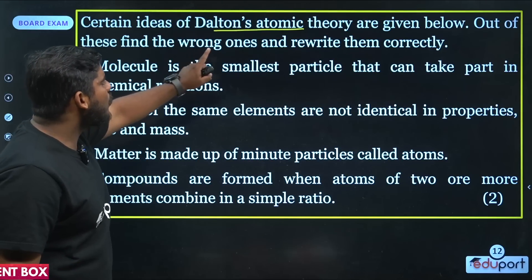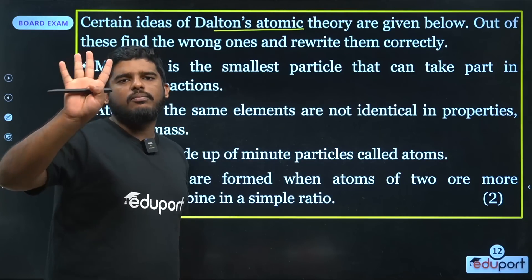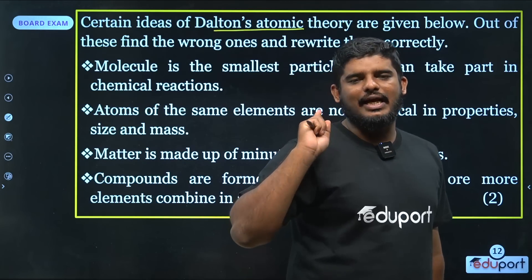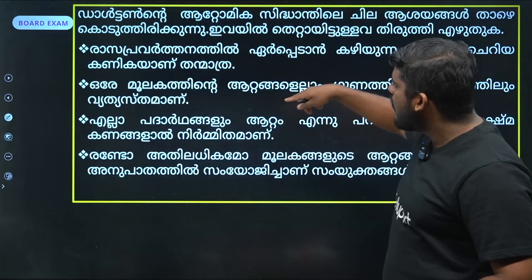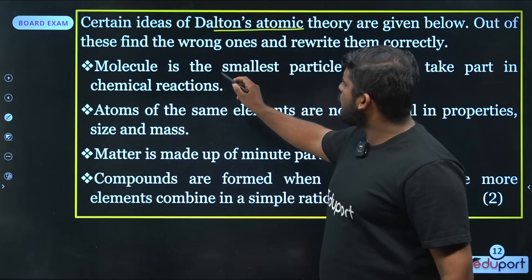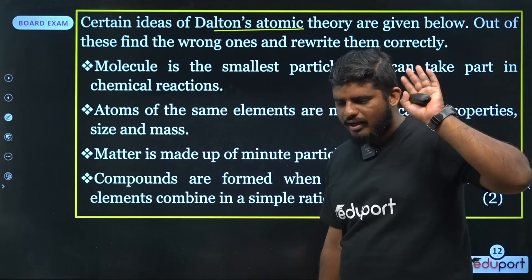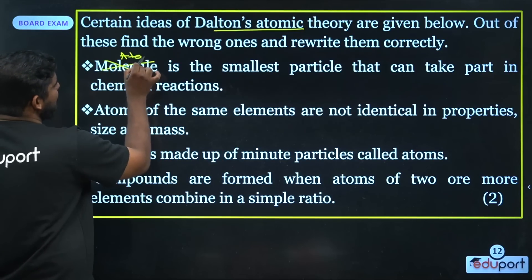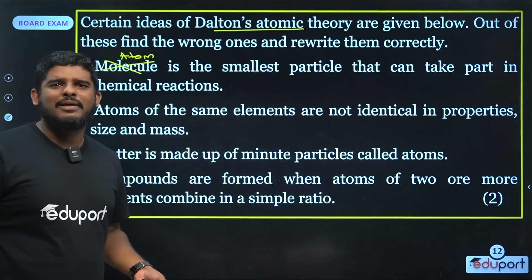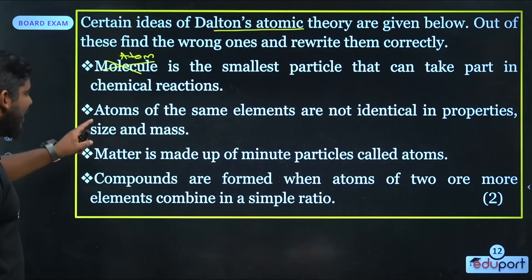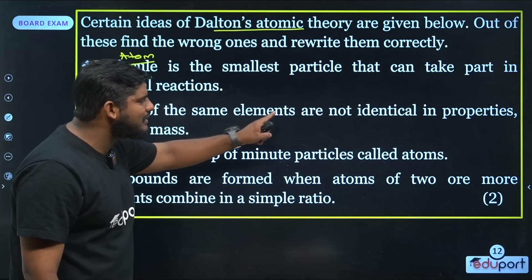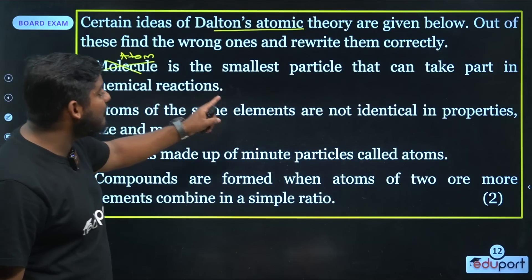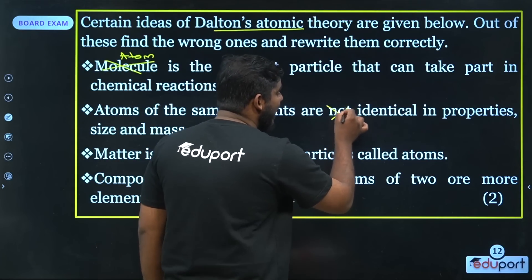Out of these, find the wrong ones and rewrite them correctly. Molecule is the smallest particle — this is wrong. Atom is the smallest particle that can take part in a chemical reaction. Atoms of the same elements are not identical — this is wrong. Atoms of the same elements are identical in properties, size, and mass.